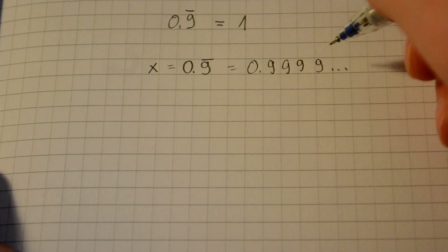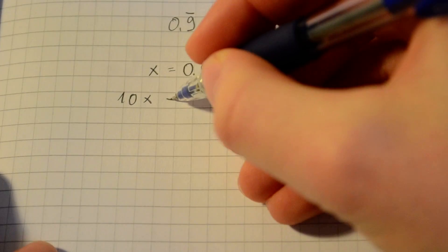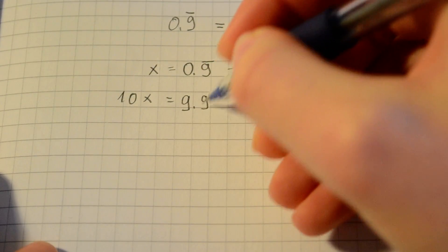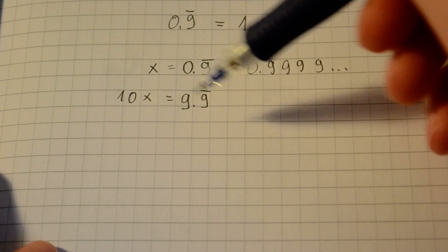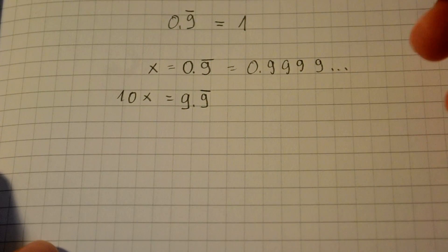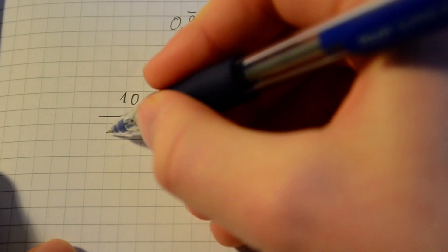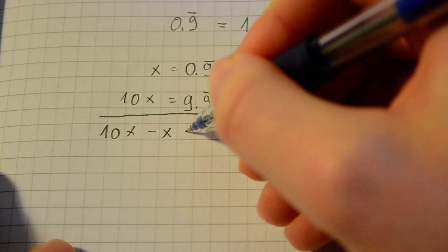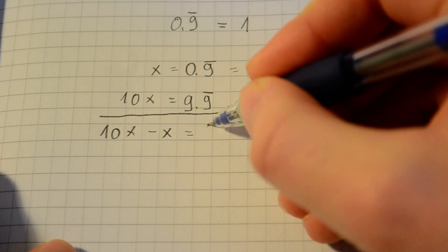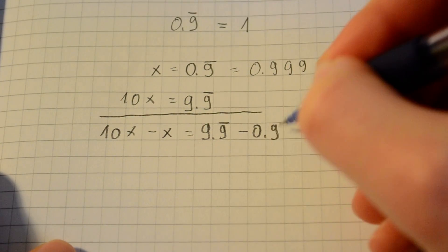And now if you take 10x, that is 9.9 repeating. If x is 0.9 repeating, then 10x is 9.9 repeating. Now, if you get 10x minus x, then you would get 9.9 repeating minus 0.9 repeating.